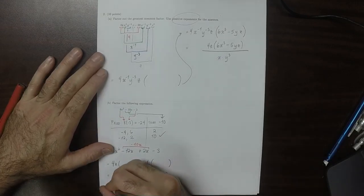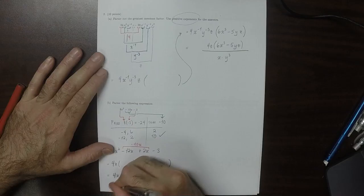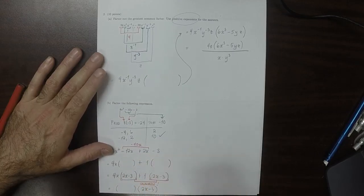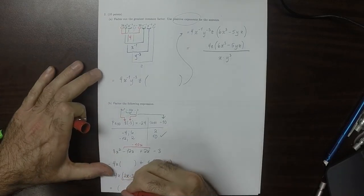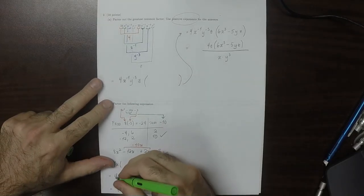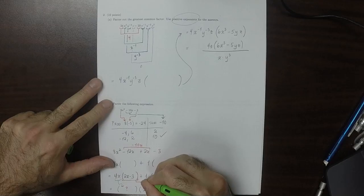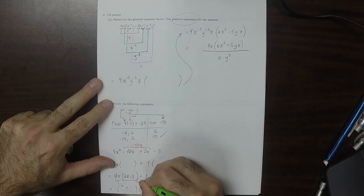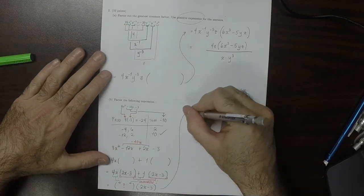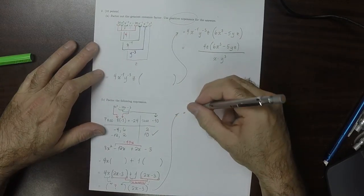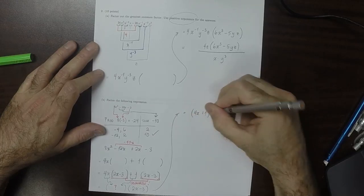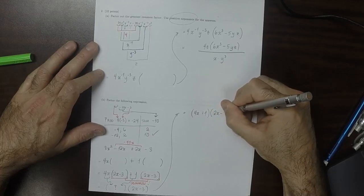Because 2x minus 3 is common, I can factor it out. Factoring out 2x minus 3, what goes in the other factor is 4x plus 1. So the answer is 4x plus 1, multiplied by 2x minus 3.